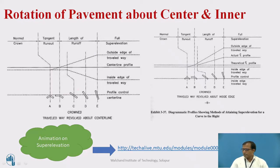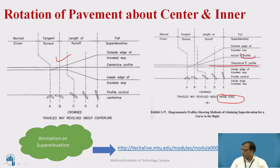This is the diagrammatic view showing rotation of the pavement with respect to the inner edge, which is the same diagram shown in the previous slide. Here, the inner edge of the pavement is not altered. We alter the center line of the pavement and the outer side of the pavement. This profile view shows the schematic of how super elevation is provided with inner edge rotation.